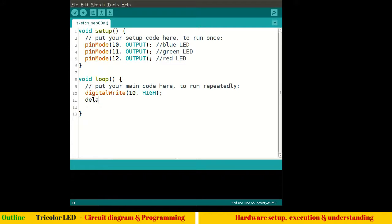Let me quickly write the program. digitalWrite high delay. Let me give 500. This means 0.5 seconds of delay. Similarly, let me copy these two lines. Instead of high it should be low. These four lines will take care of first blink which is of pin number 10, pin number 10 is blue.